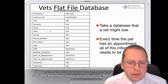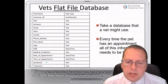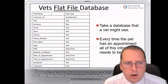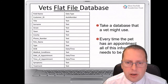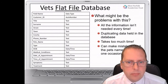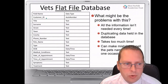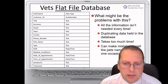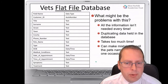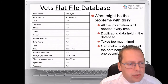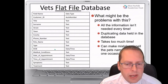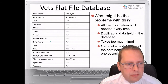So the main problem with this flat file approach is repetition of information. Not all this information is needed every time the animal goes into the vet, and it does take a long time to input all this data. Because of the amount of data being inputted, mistakes can be made — spelling mistakes on pet names, for example. There are lots of easy ways to make errors when filling in a lot of data.